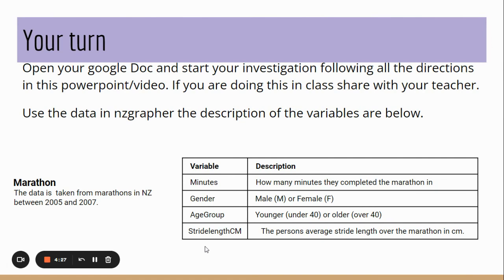Here's one on the marathon data using NZ Grapher. If you want to have a go, you could try this one using data from marathons in New Zealand between 2005 and 2007. You need a year because that's part of the question. You've got two things you can use to split it up: male and female, younger and older, and how many minutes they took and average stride length. Have fun!